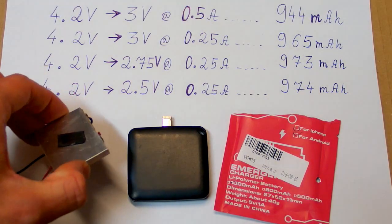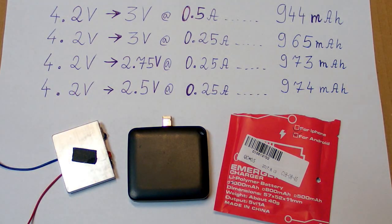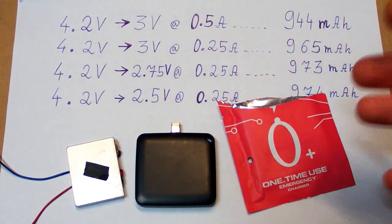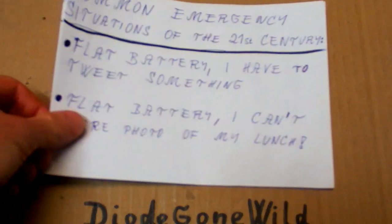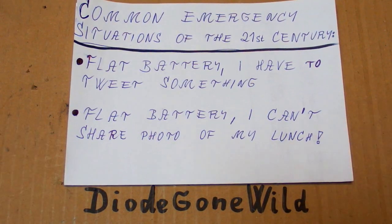But sadly this battery is being used as a disposable battery here which is quite wasteful. Of course this is just for an emergency situation but what is or isn't an emergency situation is quite relative. So this is Diode Gone Wild and see you in my next videos.